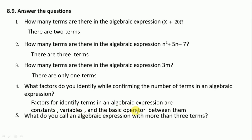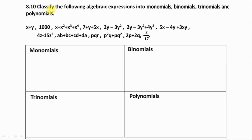Question number five: what do you call an algebraic expression with more than three terms? It is called a polynomial. Next, 8.10 — classify the following algebraic expressions into monomials, binomials, trinomials, and polynomials. One term is monomial, two terms is binomial, three terms is trinomial, and more than three terms is polynomial.